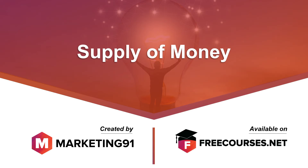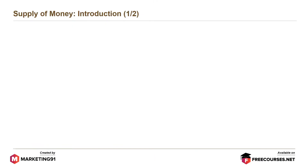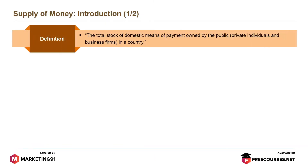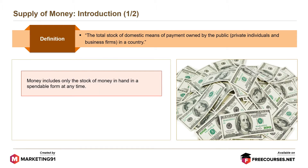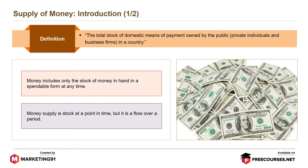Welcome to marketing91.com. By definition, supply of money is the total stock of domestic means of payment owned by the public, private individuals and business firms in a country. Money includes only the stock of money in hand in a spendable form at any time. Money supply is a stock at a point in time but it is a flow over a period.